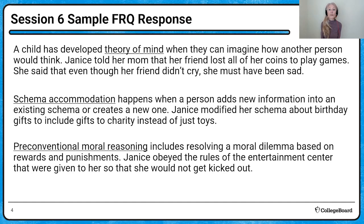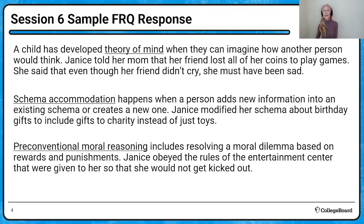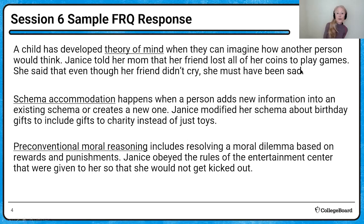And finally, pre-conventional moral reasoning involves moral reasoning from an egocentric point of view — basically determining what you're going to do based upon what reward or punishment you're going to get. In this case, Janice obeyed the rules of the entertainment center so that she would not get kicked out — very much a pre-conventional thought process.